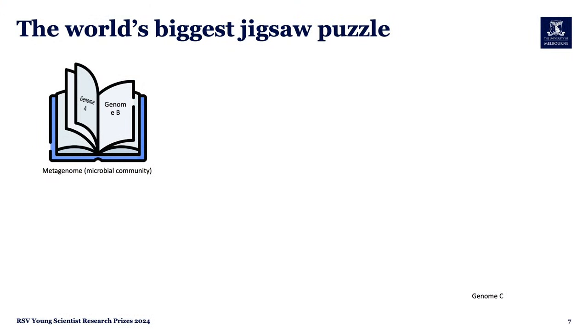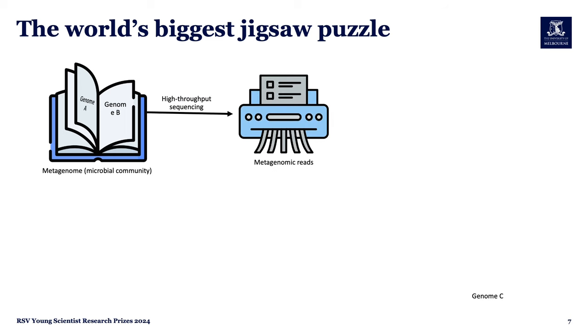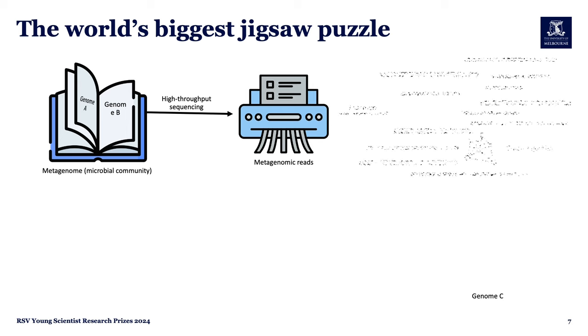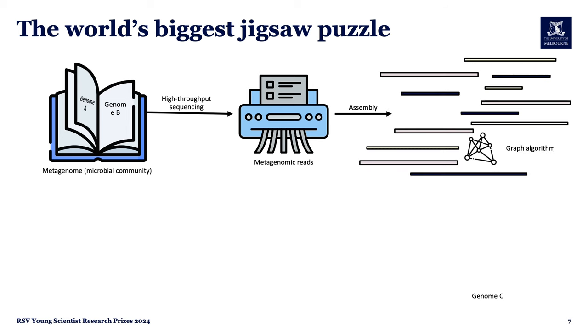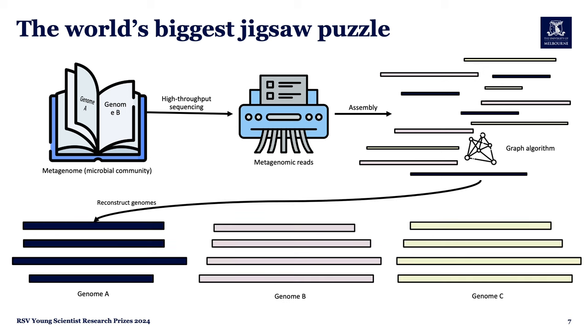We can think of metagenomics as follows: a bucket of seawater or a piece of soil is like a book, where each page is a microbial genome. We pass that book through a paper shredder — our DNA sequencer — generating millions of tiny pieces. The next step is to assemble these pieces into longer fragments, and then group those sequences together to reconstruct the pages of our book: our genomes.